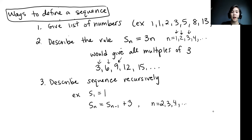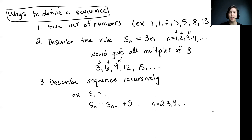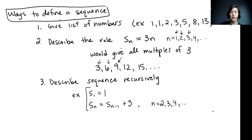So those are two of our options so far: list out a bunch of the terms, or describe the explicit rule. A third way we can define a sequence is recursively — we give the first term or first few terms, and then a rule for how to get future terms based on already described terms. For example, let's have S1 equals 1, meaning our first term is 1.